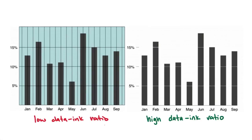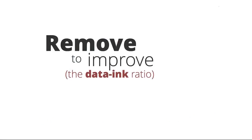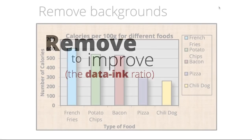When we're building data visualizations, we always want to strive for as high of a data-to-ink ratio as possible. Let's go through a few more examples of how we can take a visualization with a low data-to-ink ratio, or extraneous elements, and reduce it down to something that is simpler and much easier to understand. In this example, we're going to take a visualization and try to improve its data-to-ink ratio.